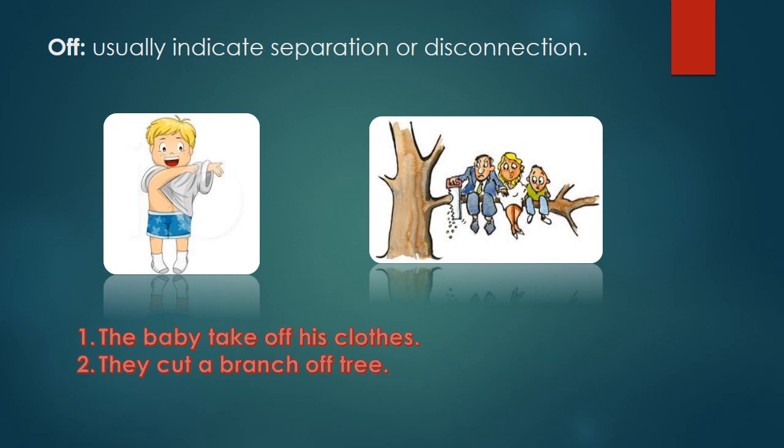'Off' usually indicates separation or disconnection. For example: 'The baby takes off his clothes' — the baby is removing his clothes. 'They cut a branch off the tree' — they are cutting down part of the tree. So 'off' indicates separation or disconnection.